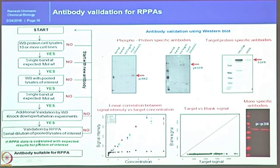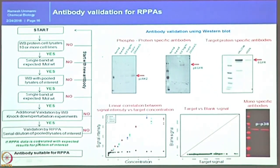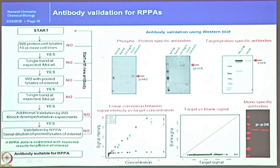We simply take a small pool of lysates, print on the glass slides, use the antibody, and probe it to see whether it is really detecting signals. When you plot concentration versus signal intensity, as concentration increases the signal goes up, while the blank signal stays at the base level. We also check whether detection levels are in the detectable range. If the target signal is very near to the blank signal, there is no linearity and we have to drop the antibody at this step.